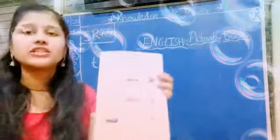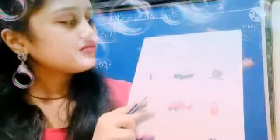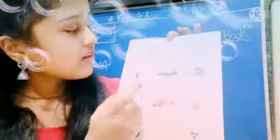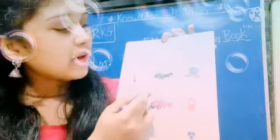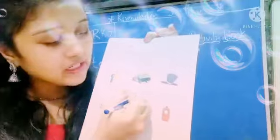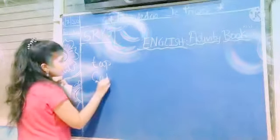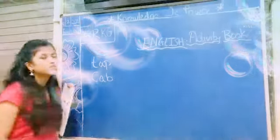Now what is the next picture? CAB. C-A-B, CAB. What you will write? C-A-B, CAB.